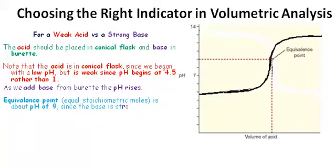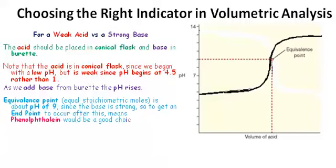The equivalence point where you get equal stoichiometric moles is about pH 9. To get an endpoint to occur after this, we need to choose an indicator in the basic range, which means phenolphthalein would be a good choice with pH changing around 8, 9, or 10.